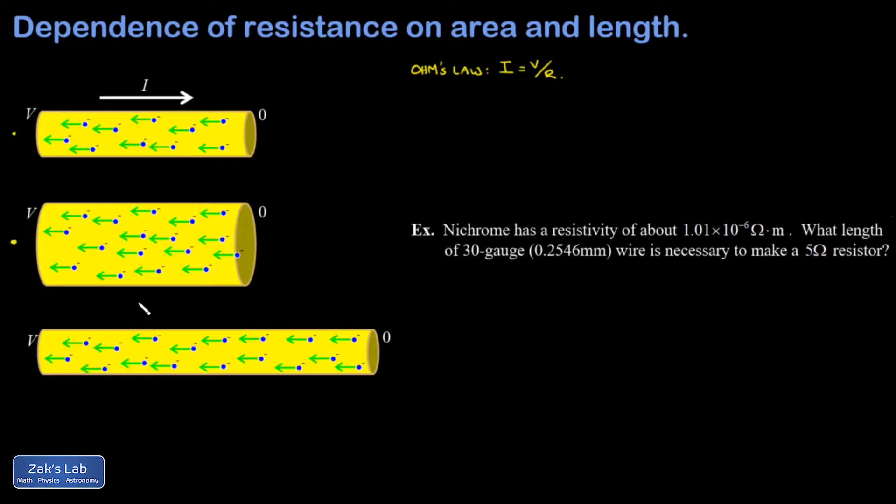If I look at Ohm's law and see the current just went up because of the changes I made, well I didn't change V, so R must have gone down in order to increase the current. We've obtained the first proportionality: the resistance is inversely proportional to the cross-sectional area of the wire.